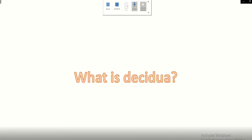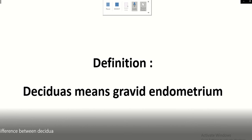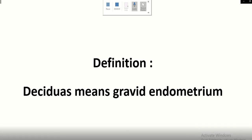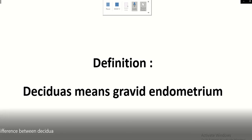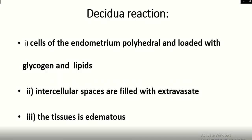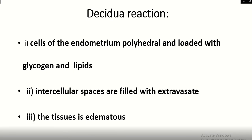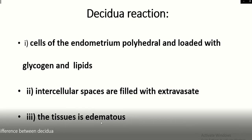Assalamualaikum, welcome to Easy Human Anatomy channel. In this video I discuss decidua — decidua means the gravid endometrium. The decidual reaction involves cells of the endometrium becoming polyhedral and loaded with glycogen and lipid, and the intercellular spaces are filled with extravasation and tissue fluid.